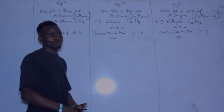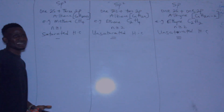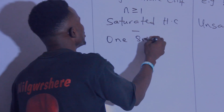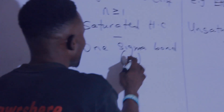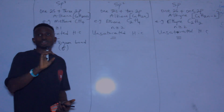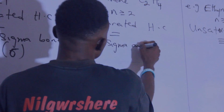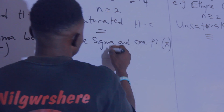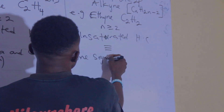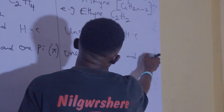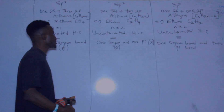Let us look at more characteristics of sp³, sp², and sp. The sp³ hybridization contains only one sigma bond and no pi bonds. The sp² hybridization contains one sigma bond and one pi bond. The sp hybridization contains one sigma bond and two pi bonds. That is the difference between sp³, sp², and sp.